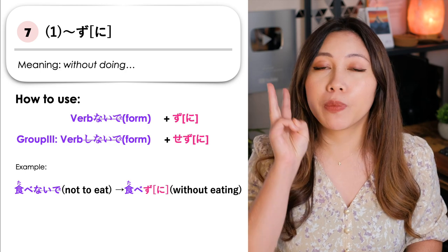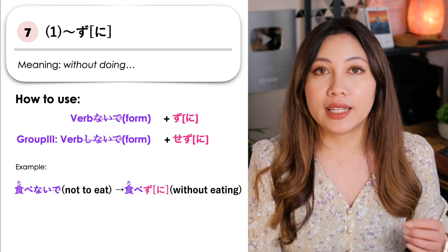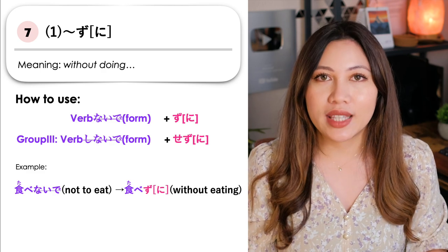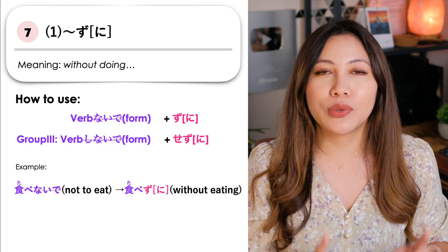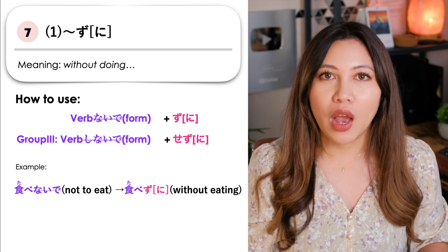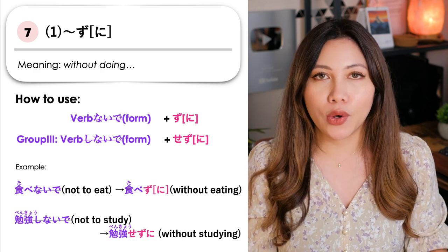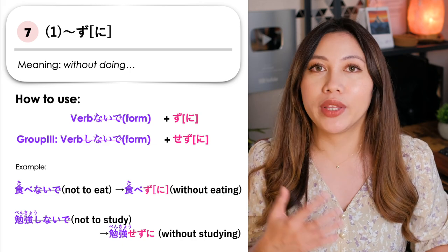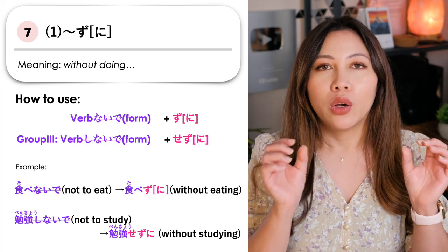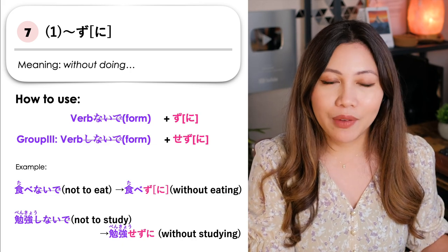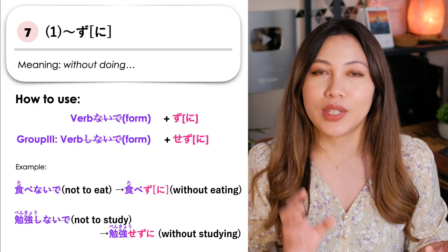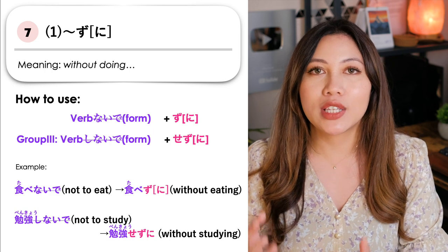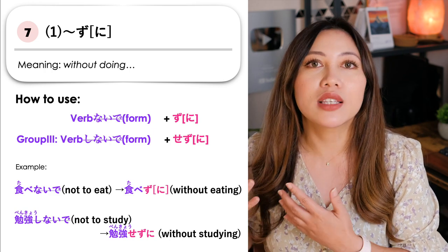However, if it's a group 3 verb or nani-nani suru, instead of zu ni we say se zu ni. For example, benkyo shinaide — without studying — we remove shinaide and add se zu ni. So benkyo shinaide becomes benkyo se zu ni, meaning 'without studying.'